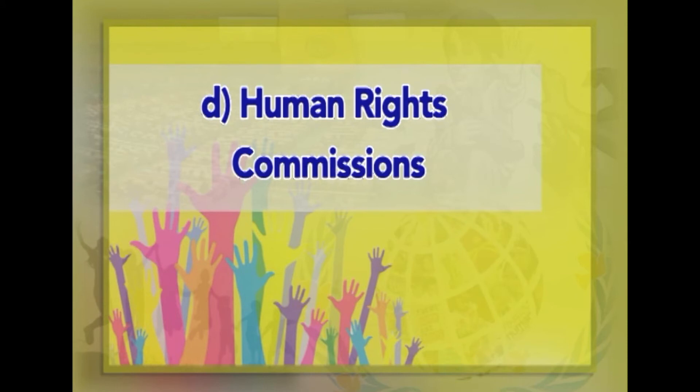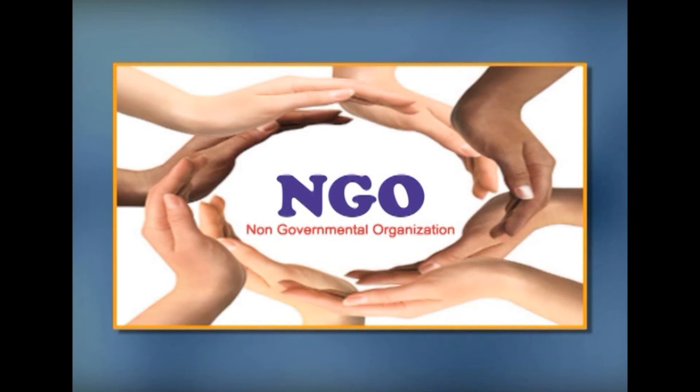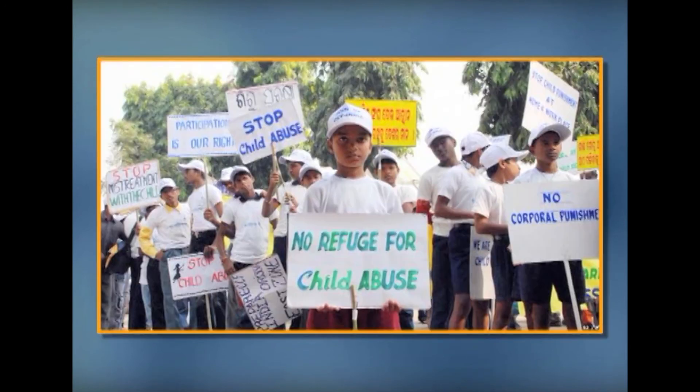The National and State Human Rights Commissions established under the Protection of Human Rights Act 1993 also protect the human rights of children in India directly and also indirectly. As the Act does not distinguish between human rights of adults and children, all kinds of human rights are recognized by the Commissions and the same are protected by following the mechanism provided under the said Act. The above mentioned mechanism is in addition to the role of the regular courts, police, prosecutions, NGOs and activists in protection of human rights of children in India.